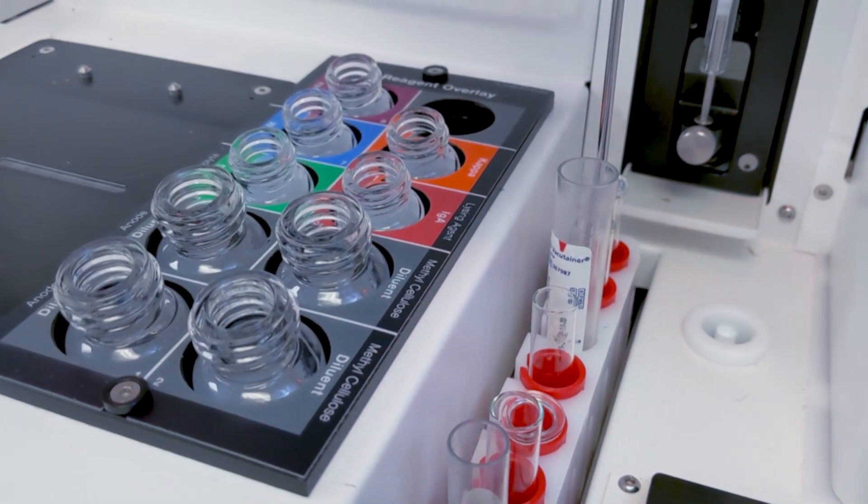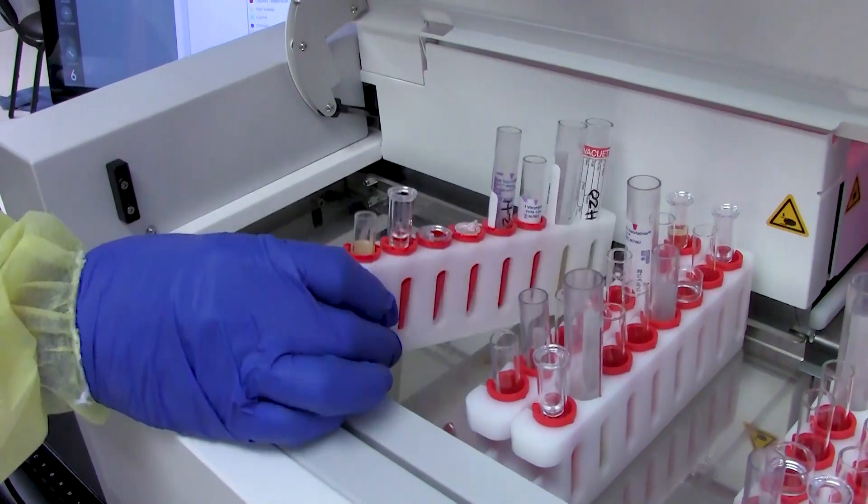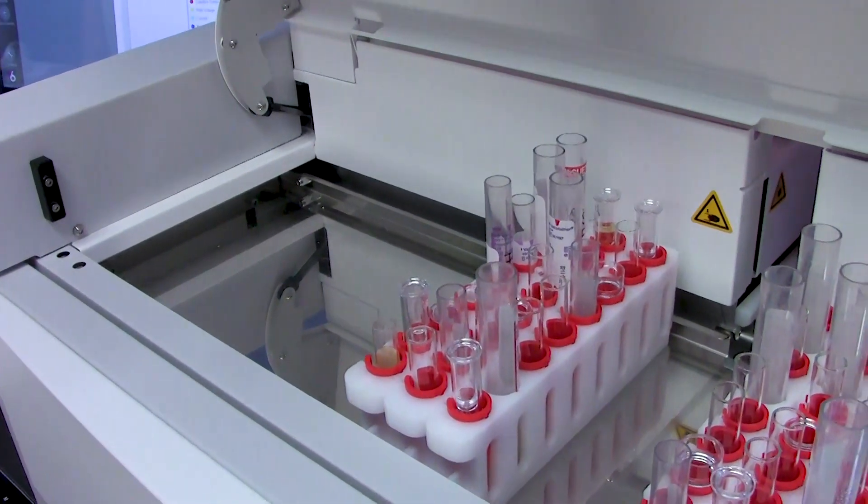To begin a run, the operator simply opens the sample door and places racks of barcoded patient specimen tubes on the left side of the instrument.